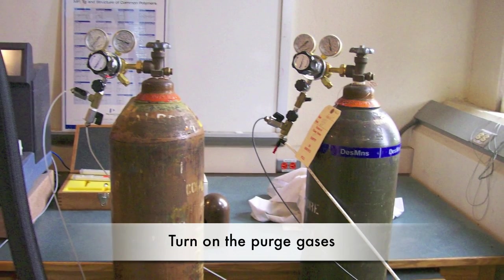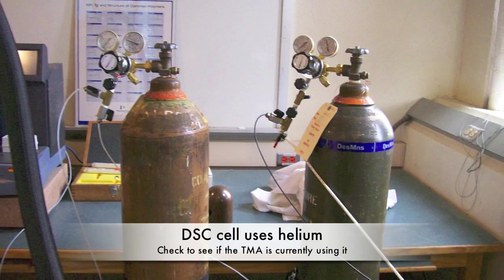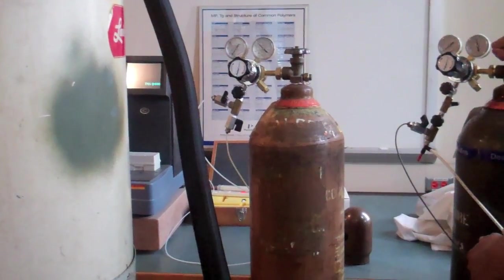Next, you must turn on the purge gases. The DSC cell operates under helium gas. Open the main valve on the helium gas tank and then the DSC valve. This type of valve is open when it is parallel with the gas line.